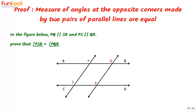Here we are going to discuss a proof which is based on the properties of parallel lines. In the figure below, PQ is parallel to SR and PS is parallel to QR. We have to prove that angle PSR is equal to angle PQR.